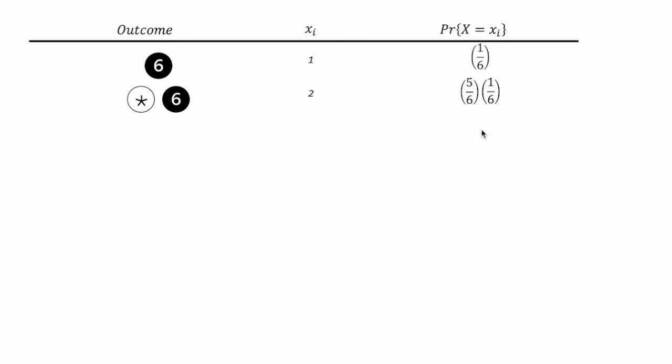Now it could be 2. Right? So, we don't roll a 6 on the first try, and then we roll a 6 on the second roll. So, probability of that occurring is 5 over 6, times 1 over 6, because 5 over 6 is the probability of rolling the other 5 numbers that are not a 6. It could be 3. Similarly, we roll 2 numbers that are not a 6, and then we roll a 6. So, it's 5 over 6, times 5 over 6, times 1 over 6.